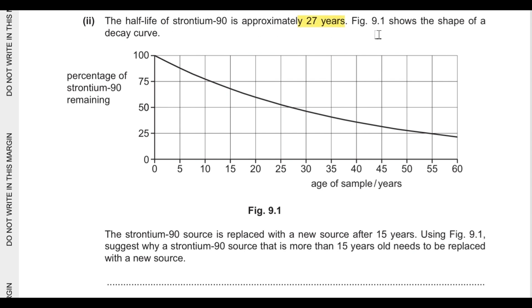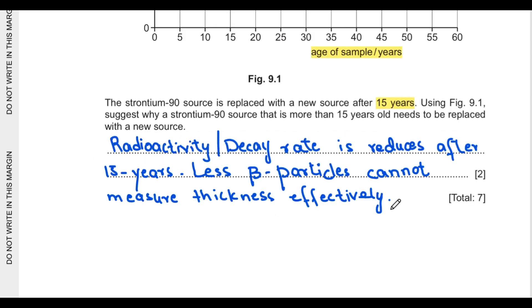Second question says the half-life of strontium-90 is approximately 27 years. Figure shows a decay curve with percentage of strontium-90 remaining versus age of sample. The strontium-90 source is replaced by a new source after every 15 years. Using figure 9.1, suggest why a strontium-90 source that is more than 15 years old should be replaced with a new source. Because if the strontium gets old, its radioactivity or decay rate is reduced after 15 years and fewer beta particles cannot measure the thickness of metal sheets effectively.